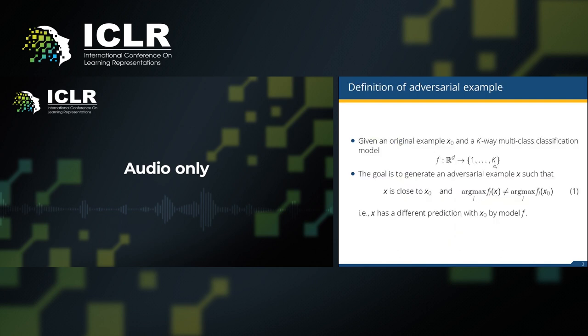Let's formally define the problem first. With the K-way classifier F and the original example x0, we want to find an example that is very close to x0, but the model will generate a different label.